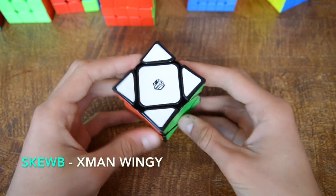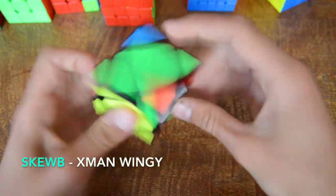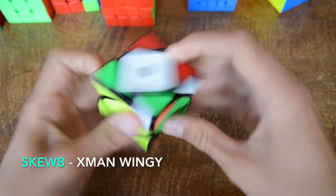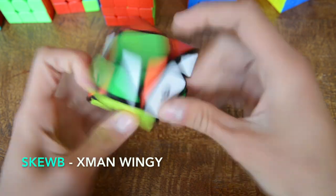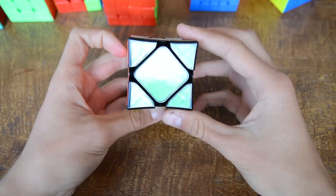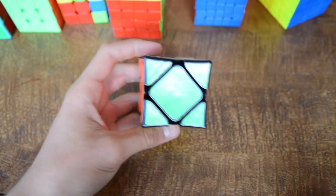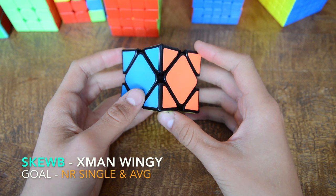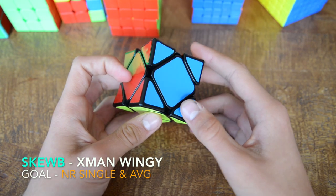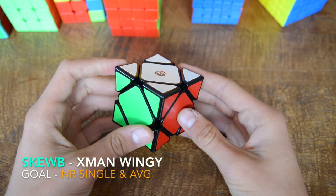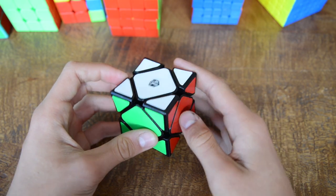Next up we have skewb. This is the X-Men Wingy skewb and it is amazing, an amazing cube. I really like doing this algorithm. It's so satisfying and I know this is out of focus but let's just... Okay, this is way better. My goal is to get a PB average. Maybe an NR single because an average, I think if I get lucky only then it's going to happen.